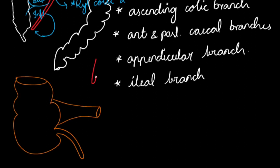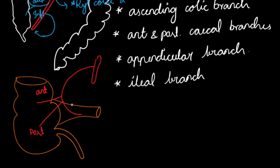The superior mesenteric artery gives the ileocolic artery, and this ileocolic artery gives branches to the cecum as the anterior cecal artery and the posterior cecal artery. It also enters into the mesentery and supplies the appendix as the appendicular artery.